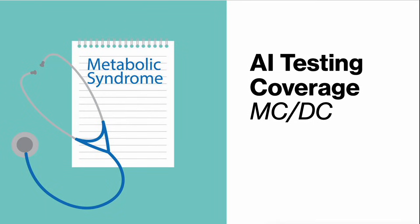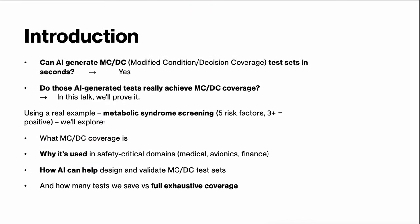Hello and welcome to a short tutorial on creating modified condition/decision coverage — MCDC testing — using AI. In this case I use ChatGPT, and we will use metabolic syndrome as our test case. These tests will be used to provide quality assurance sign-off on a new metabolic syndrome piece of software. The principles for this testing can be applied to any software testing, including financial systems. In this slide I want to frame the core question of the talk.